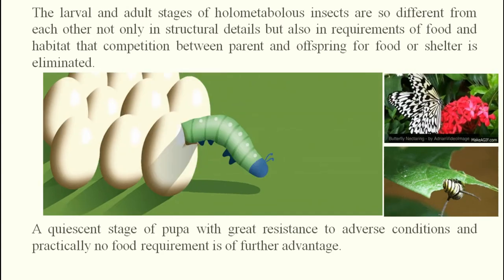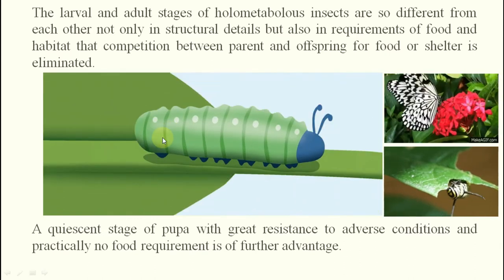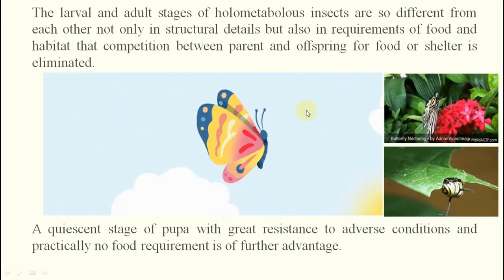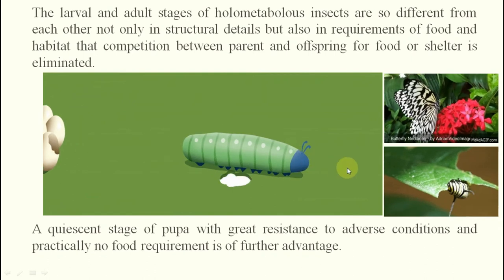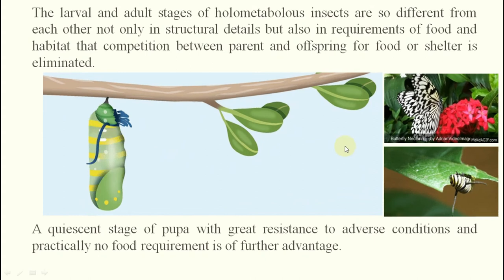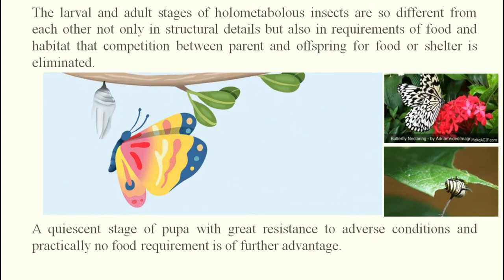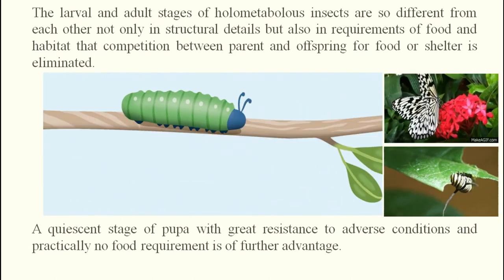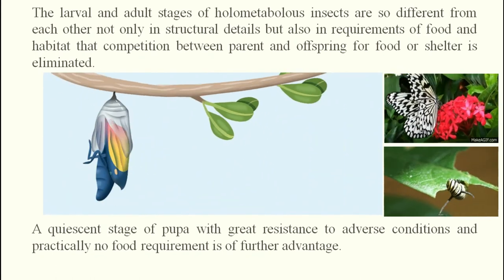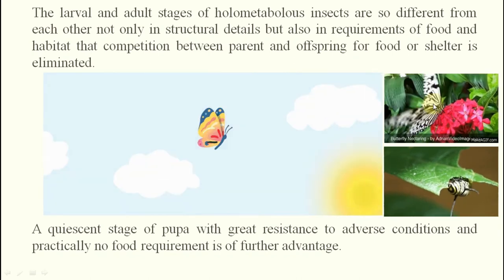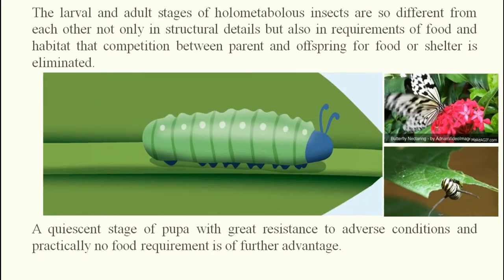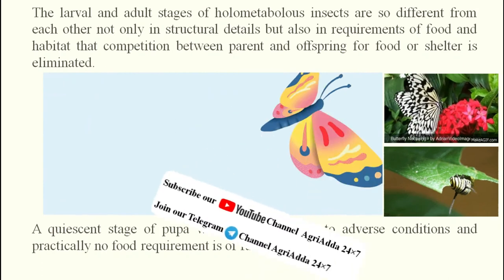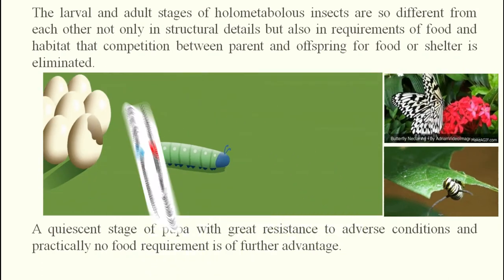Now, coming to developmental characters. Insects pass through stages: egg, larva, pupa, and adult. The egg and pupa stages are non-feeding stages with no competition for food. Importantly, the feeding habits of larvae and adults are different — for example, larvae feed on leaves while adults feed on nectar. This difference in food requirements reduces competition between life stages of the same species.